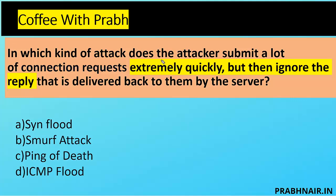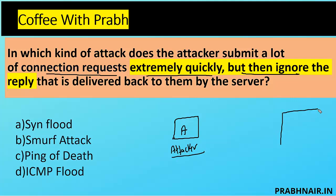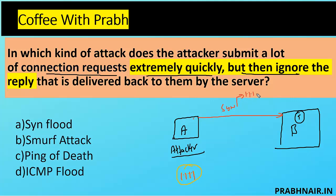Next question: in which kind of attack does the attacker submit a lot of connection requests extremely quickly but then ignore the reply delivered back by the server? The option is SYN Flood attack. In a SYN Flood, we have attacker system A and target system B. System A takes a random, non-existent IP — say 1.1.1.1 — spoofs it, and sends a SYN request to B.